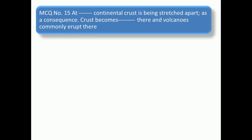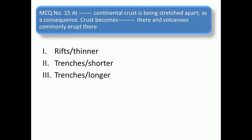MCQ number 15: If continental crust is being stretched apart as a consequence, crust becomes thinner and volcanoes commonly erupt there. The options are: rift thinner, trench shorter, trench longer, rift thicker. So the right answer is number 1: rift thinner.